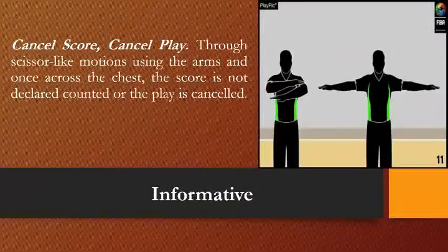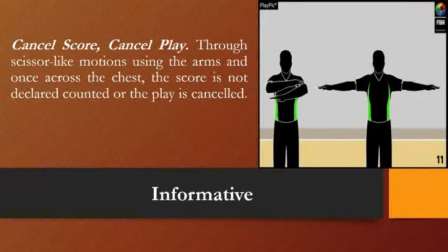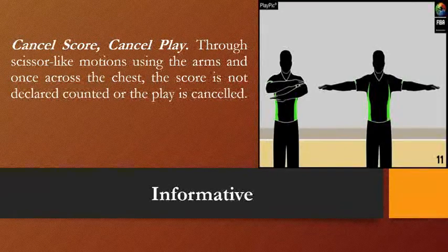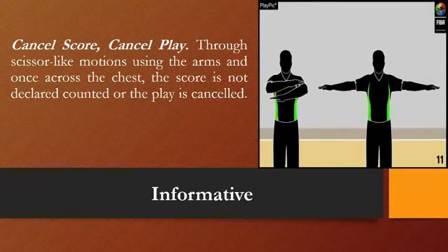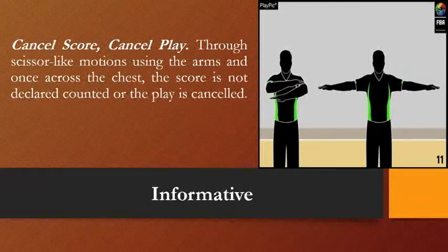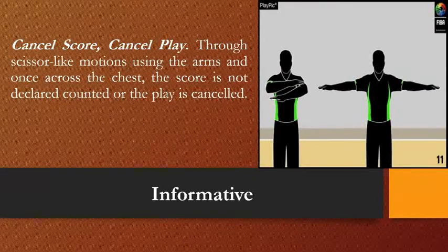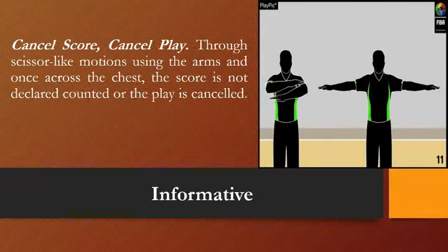Another classification of hand signals is the informative. It is the duty of the referee to inform the officials table, the players, and the whole bench what happened during the game. The first is cancelled score and cancelled play. Through a scissors-like motion using the arms crossed at the chest, the score is not declared counted or the play is cancelled.